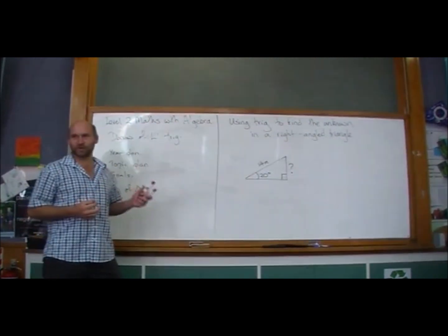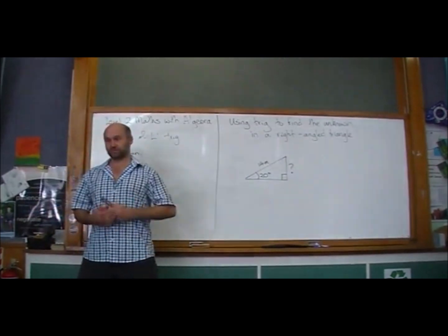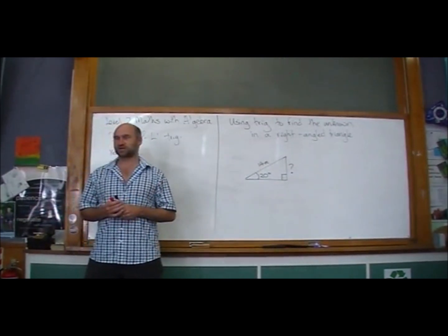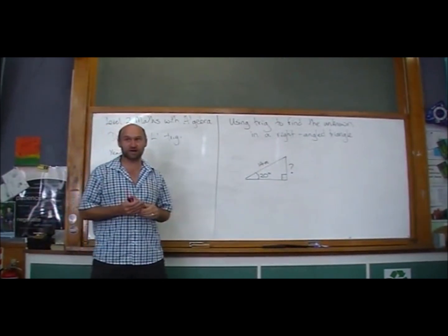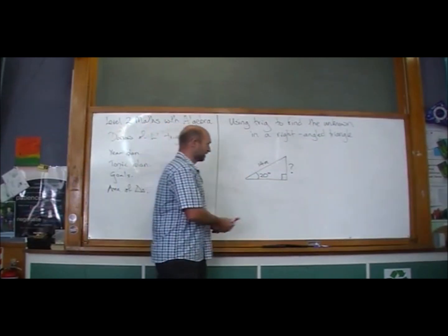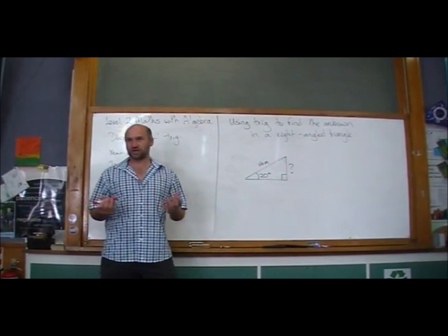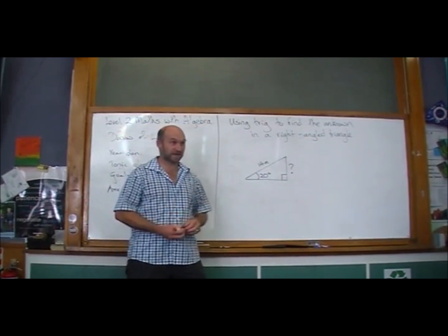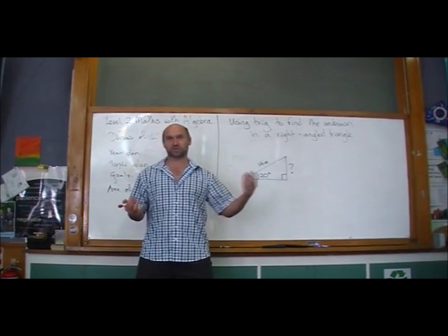Okay, so we're going to do a quick little rush through revision of how to use sine and cos and tan to find unknowns in right-angled triangles. The first thing we need to do is to work out which trig function we're going to use. Are we going to choose sine or cos or tan?